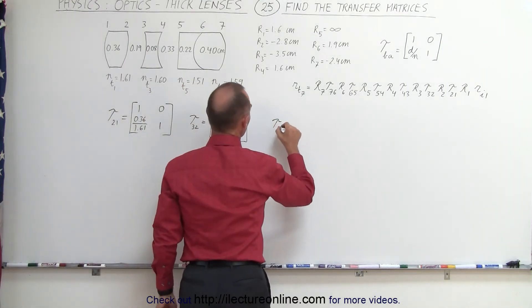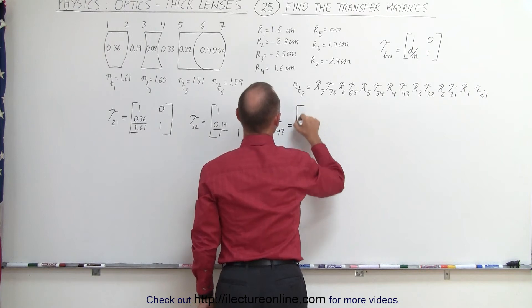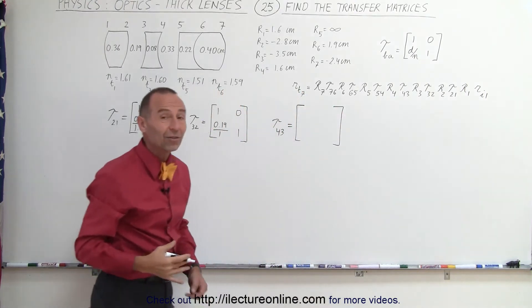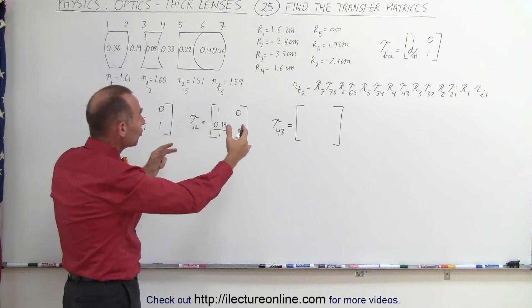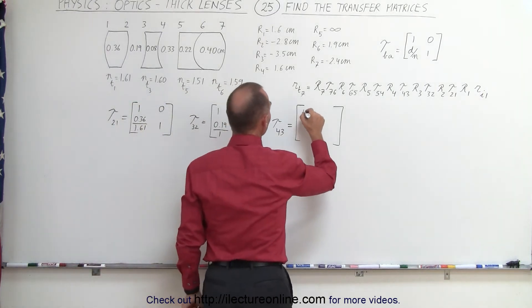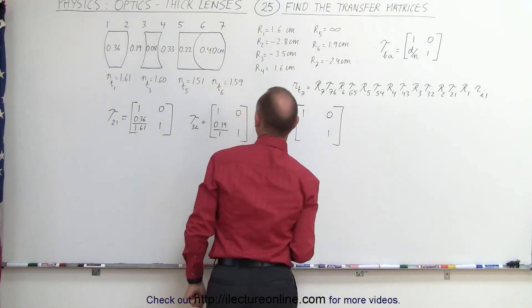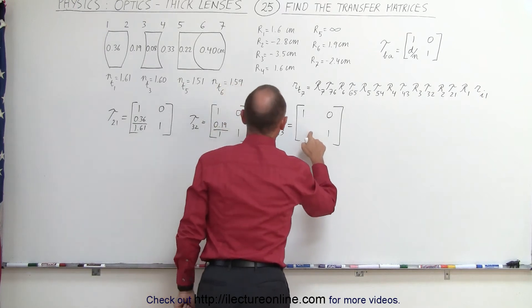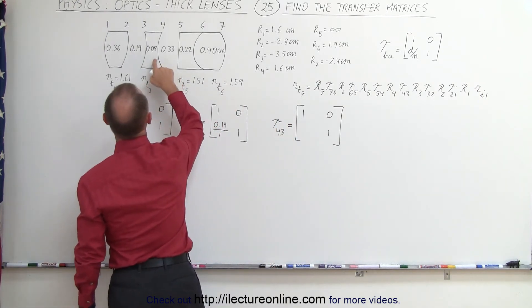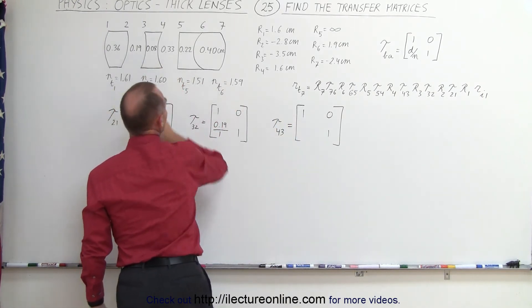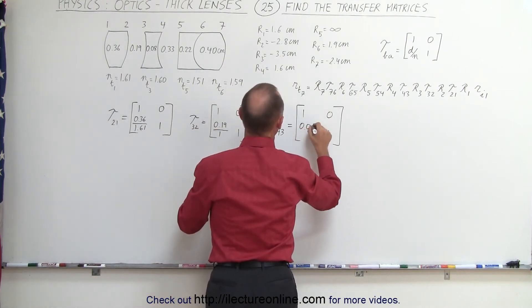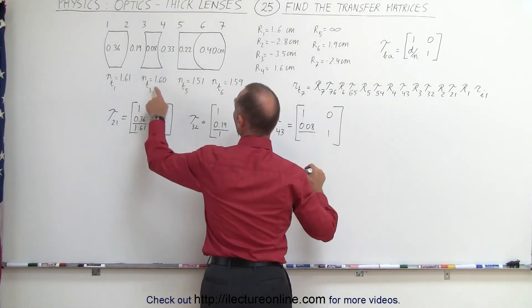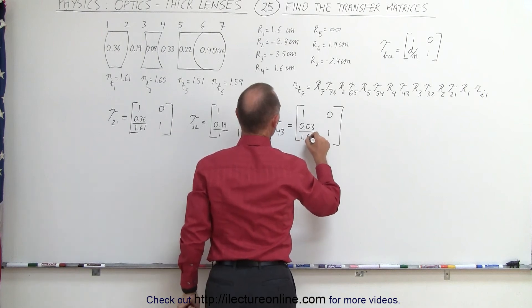The third transfer matrix, that would be from 4 to 3. That is equal to, and the reason why I do all of them like this, is you can see the methodology, and then you get the confidence that this can be quite easily done if you just follow the methodology. So from 4 to 3, that would be this transition right here. So that would be the thickness, 0.08, divided by the index of refraction, 1.60.